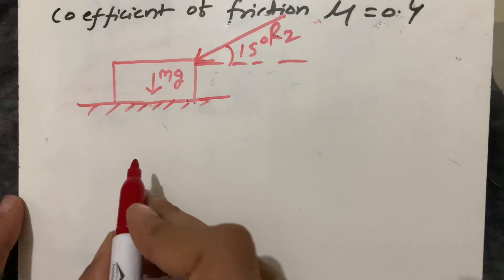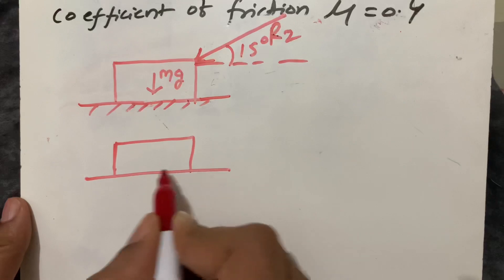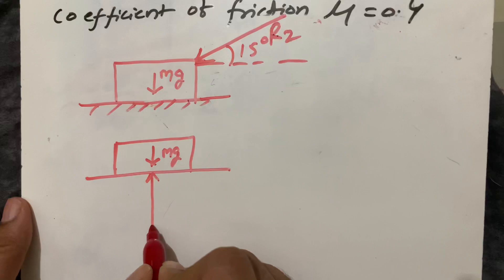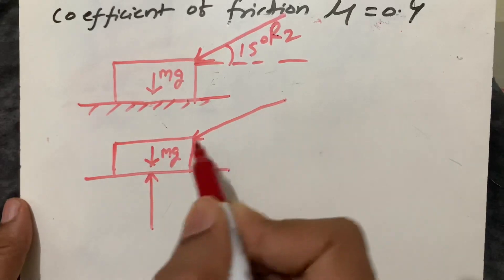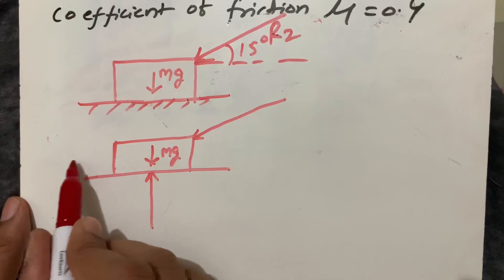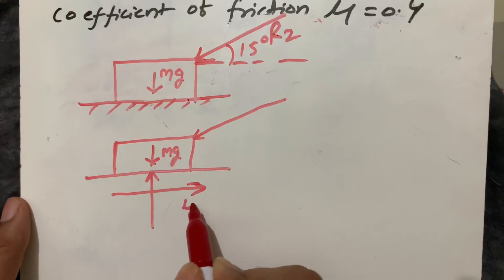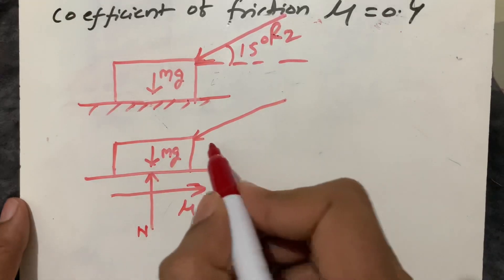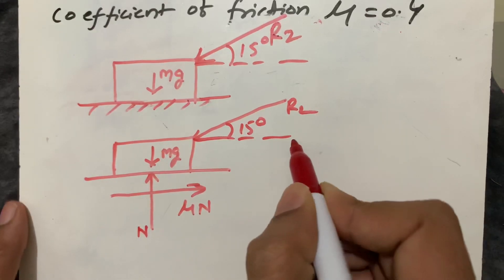For the free body diagram of the push condition: the block rests on the horizontal surface, weight acts downward, normal reaction acts upward. When the force R2 pushes in this direction, the block moves in this direction, and the opposing friction force acts in the opposite direction. The angle θ is 15 degrees and the force is R2.